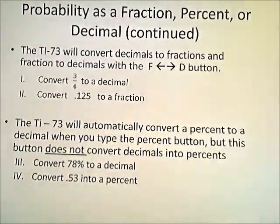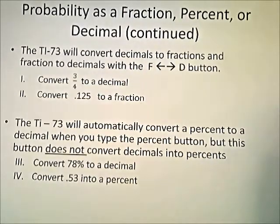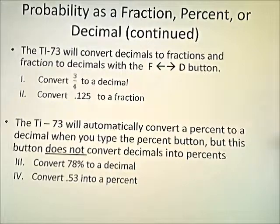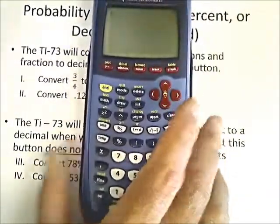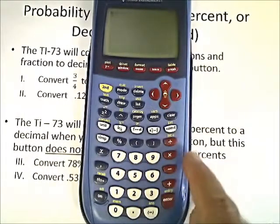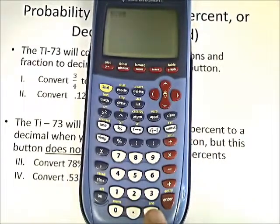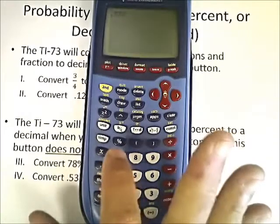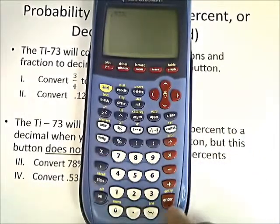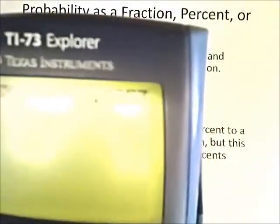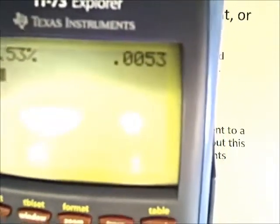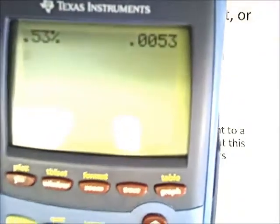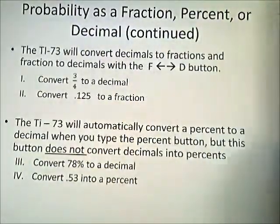Finally, number four, we're going to look at converting 53 hundredths into a percent. Let's look at how we do it on a calculator. We're going to put in 0.53, then find the percent button and enter that. We get 0.0053 — we move it two places — making it fifty-three hundredths of a percent, or 0.53%. So that's our answer for that one.